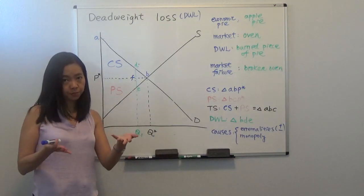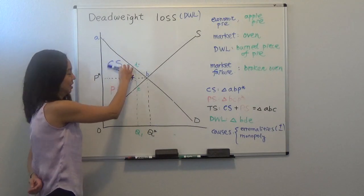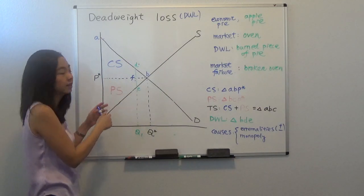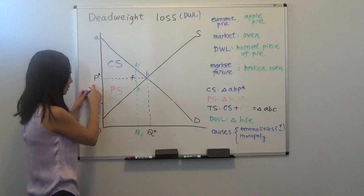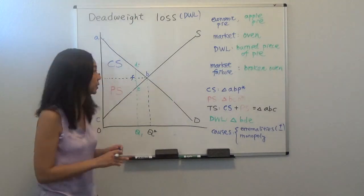So your new consumer surplus is the area below the demand curve, above the price paid by the buyer. And the base, no, it's not triangle. The base will be from zero to Q1. So your consumer surplus now becomes a trapezoid.